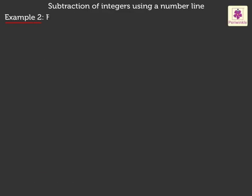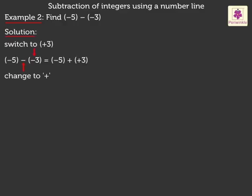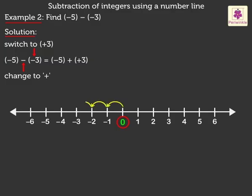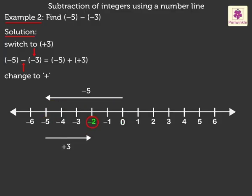Example 2: Find negative 5 minus negative 3. On changing the subtraction problem into an addition problem, we get the new question as negative 5 plus positive 3. Now, let us use the number line to solve this problem. Start from 0 and move 5 places to the left, i.e., in the negative direction. From this point, we move 3 places to the right and reach negative 2. Thus, we get the answer as negative 2.